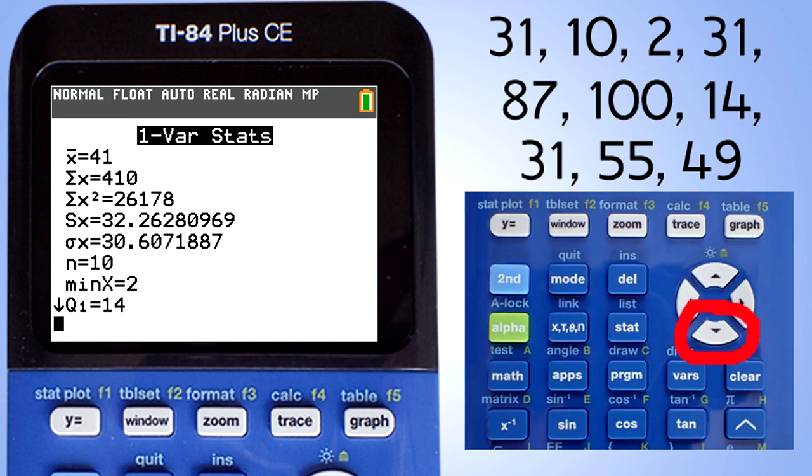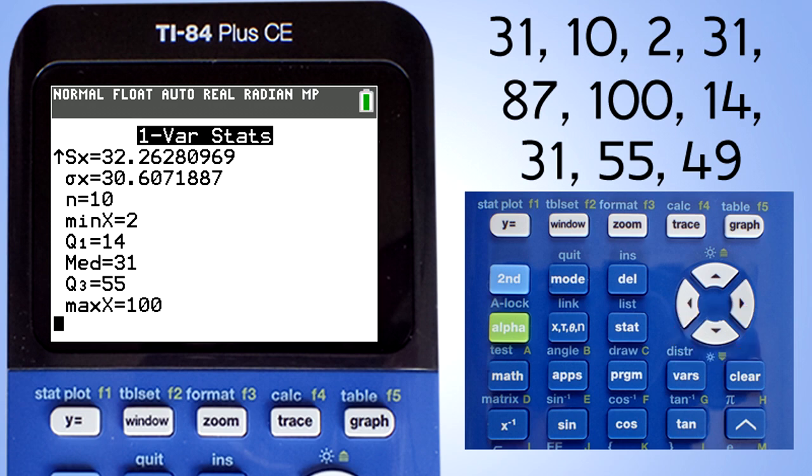Scroll down to the bottom of this screen by pressing the down arrow button here. This min x equals 2 is the minimum value in our L1 list, 2. This max x equals 100 is the maximum value in our L1 list, 100. Thus our range is from 2 to 100. This is our median, 31, the middle number between our range of 2 to 100.